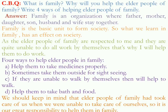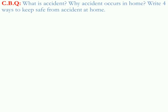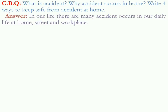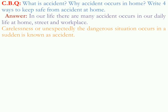Now let us look at another CBQ: What is accident? Why do accidents occur at home? Write four ways to keep safe from accidents at home. In our life, many accidents occur in our daily life — at home, on the street, and at the workplace. That means accidents can occur in any place. Now let us know what is an accident. A careless or unexpected dangerous situation that occurs suddenly is known as an accident — something uncertain that suddenly happens and is very harmful for us.